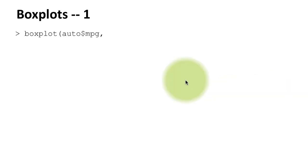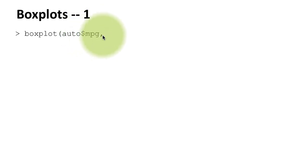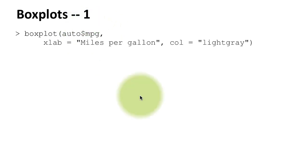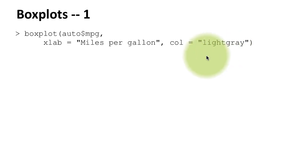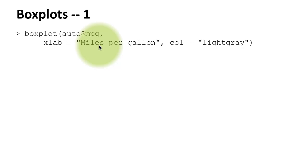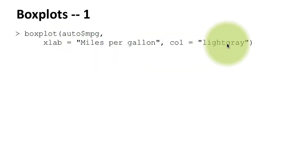Let us now take a look at boxplot. The function to create a boxplot is just boxplot — that's the name of the function. Here we want to create a boxplot of auto$mpg, and we want to control the x-axis label and also the color. We could have just said boxplot auto$mpg and gotten a boxplot, but I'm showing some additional capabilities. The x-axis label is miles per gallon and the color is light gray.